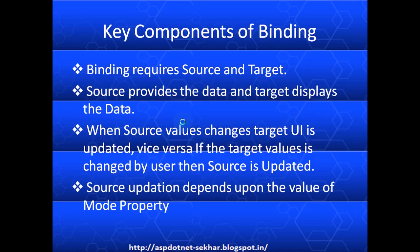Coming to components, binding requires two components — source and target. The source provides the data and the target displays the data. When the source changes, the target will also change. And also, if the target is changed by the user, then the source is updated. This source update is dependent upon the mode property, which is one of the properties of the binding element.